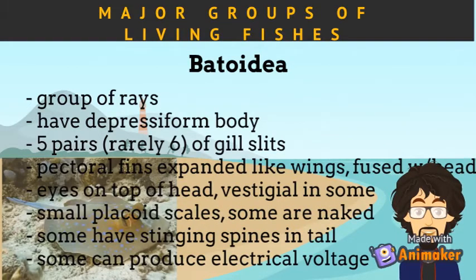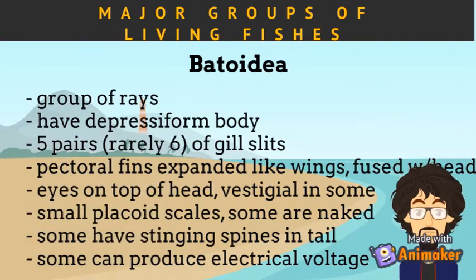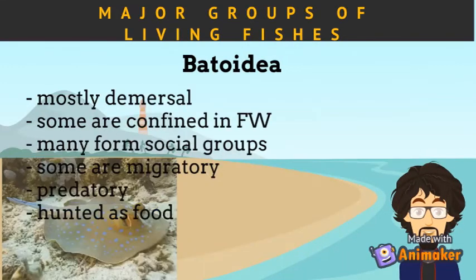Subclass Batoidea are the group of rays in Rajiformes. They have a depressed body, five pairs of gill slits, and pectoral fins expanded like wings, which are fused with the head. Their eyes are on top of the head, but are vestigial in some species. They have small placoid scales, but these are lacking in some species. Stingrays have stinging spines with a whip-like tail. Other species can produce electrical voltage. Batoideans are mostly demersal marine species, but some are confined in freshwater. Many form social groups, some are migratory, and are predatory in nature. They are hunted as food.